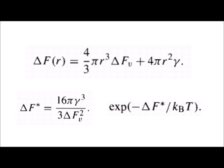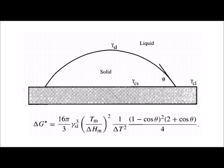Heterogeneous nucleation is a bit more complicated. If a surface of a different solid is present, it lowers the activation energy for nucleation. A crystal nucleus nucleates against the solid with a certain angle, and its contact angle depends on the tensions between the catalyst and solid, catalyst and liquid, and liquid and solid. We now find a similar change in free energy with different energy contributions because of the interface, described by this formula. If the contact angle is less than 90 degrees, this seriously decreases the degree of undercooling that is necessary.